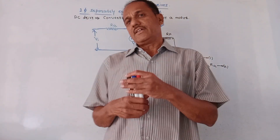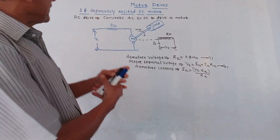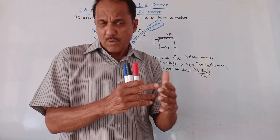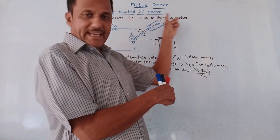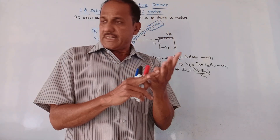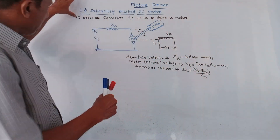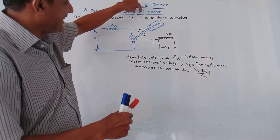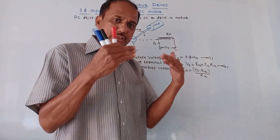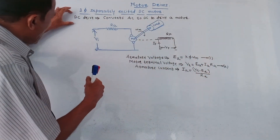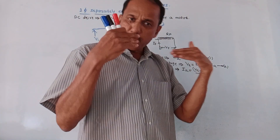Hello and welcome back to this channel. Dear students, in today's session we'll discuss motor drives. We'll talk about the motor drives required for single-phase separately excited DC motors, then brushless DC motors and three-phase induction motors. First, let us discuss the meaning of DC drive. A DC drive is a circuit which converts AC to DC to drive a particular motor.